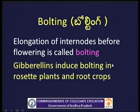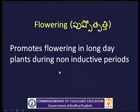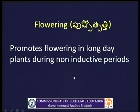Bolting: Elongation of internodes before flowering is called bolting. Gibberellins induce bolting in rosette plants and root crops. Rosette plants like cabbage can be induced to flower through bolting. Flowering: Gibberellins promote flowering in long day plants during non-inductive periods. By using gibberellins, flowering can be achieved in long day plants without waiting for the appropriate photoperiod conditions.